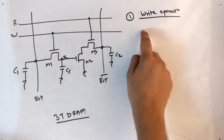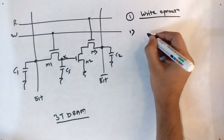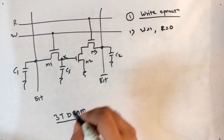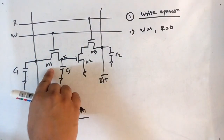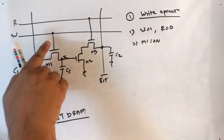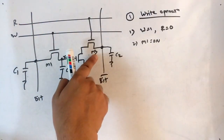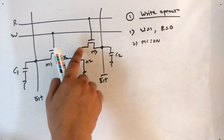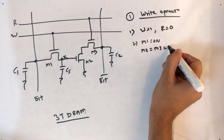Now let's see the write operation. The very first step is we have to make the write line as 1 and the read line as 0. If write is 1, then M1 would be on — only M1 is connected to this line. Since read is 0, M3 is off because it is connected to the read line. Similarly, M2 is also off, so M2 and M3 are both off.